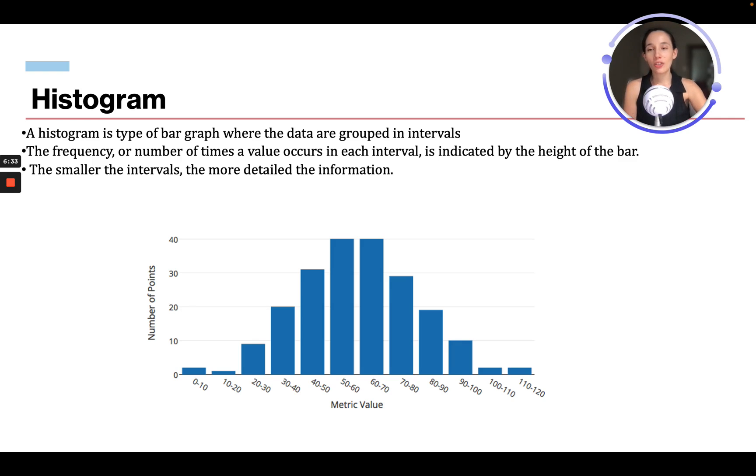So a histogram is a type of bar graph where the data is grouped in intervals. The frequency or number of times a value occurs in each interval is indicated by the height of the bar. The smaller the intervals, the more detailed the information.